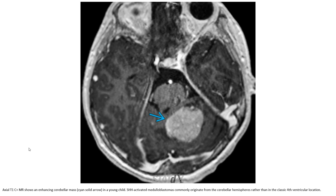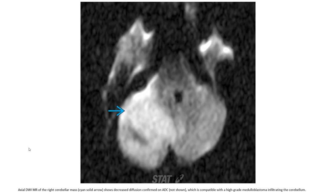This is an example where we can find on axial T2 and T1C+ an enhancing cerebral mass indicated by the solid arrow located at the junction. SHH-activated medulloblastoma commonly originates from the cerebral hemispheres rather than the classic midline or fourth ventricular location. Axial DWI shows a large cerebral mass with decreased diffusion confirmed on ADC, compatible with high-grade medulloblastoma infiltrating the cerebral hemisphere.